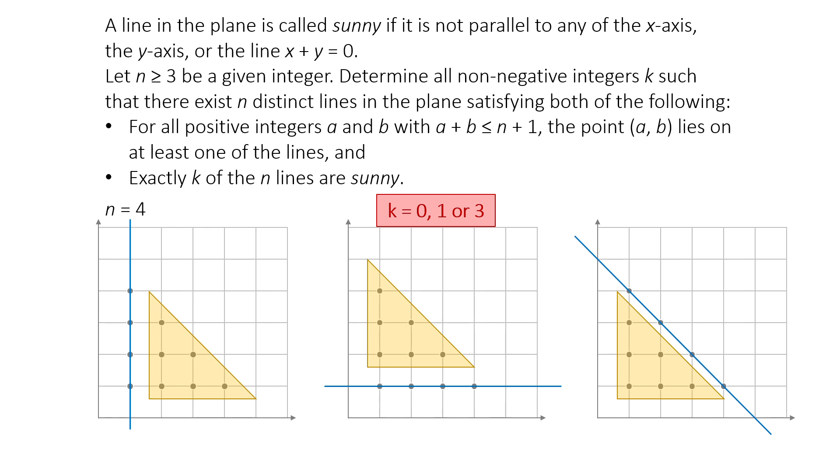When we go to n equals 4, we still can't push k beyond 3. In fact, every time we increase n to n plus 1, the new points fall along non-sunny directions. So covering those always forces us to use a non-sunny line. This leads to a simple inductive idea for every n greater than 3, the number of sunny lines is 0, 1, or 3.